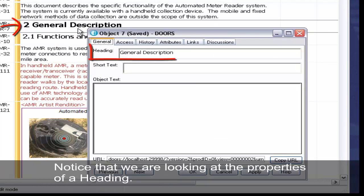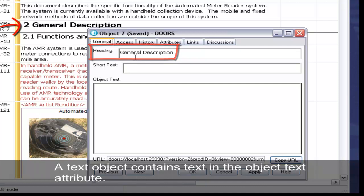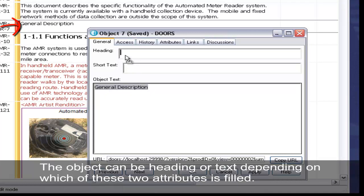Notice that we are looking at the properties of a heading. What makes this object a heading is the fact that it contains text in the object heading attribute. A text object contains text in the object text attribute. Notice that the object can transform from a heading to text when I move the text from the heading attribute to the text attribute. The object can be a heading or text depending on which of these two attributes is filled.